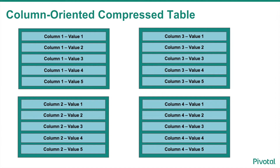Greenplum also offers compression for data tables. This is for both row- and column-oriented tables. When using compression on a column-oriented table, you can get more data values from the rows stored in each individual file.